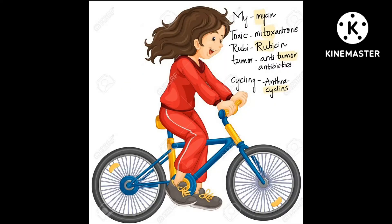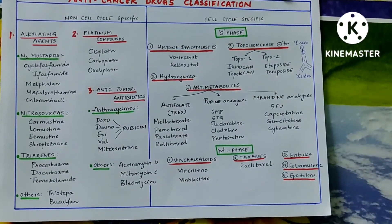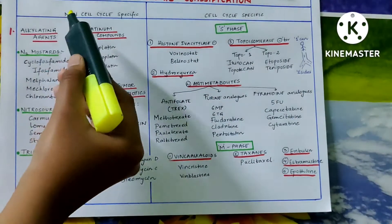The third flashcard is about anthracyclines. A girl named Ruby is riding a bicycle — my toxic girlfriend Ruby has got a tumor and she is cycling. 'My' is mycins like mitomycin and actinomycin, 'toxic' is mitoxantrone, 'Ruby' is rubicin, and 'tumor' represents anti-tumor antibiotics.